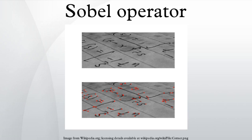The Sobel Operator is based on convolving the image with a small, separable, and integer-valued filter in horizontal and vertical direction and is therefore relatively inexpensive in terms of computations. On the other hand, the gradient approximation that it produces is relatively crude, in particular for high-frequency variations in the image.